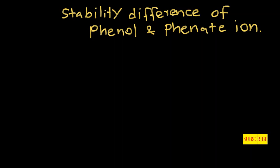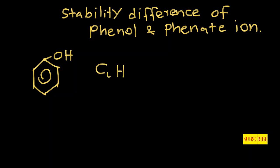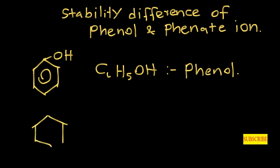In this video I'm going to teach you the stability difference of phenol and phenate ion. Firstly we need to identify phenol and phenate ion. The molecular structure of phenol is C6H5OH. The structure of phenate ion is similar — you just remove one hydrogen atom from the OH group of phenol.